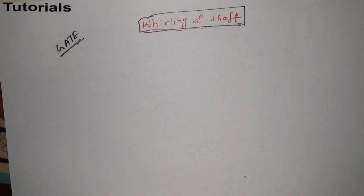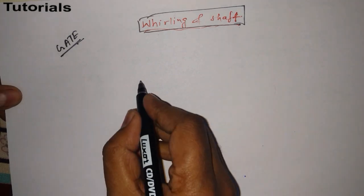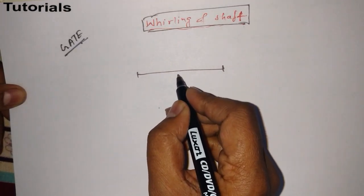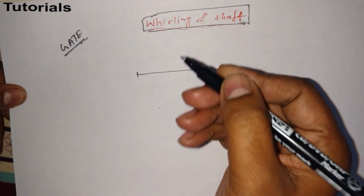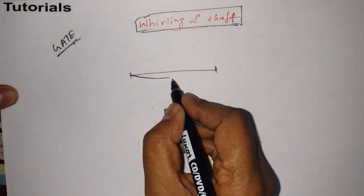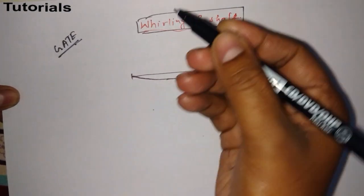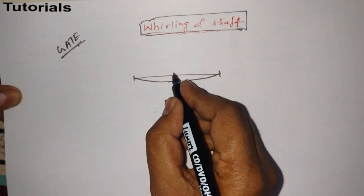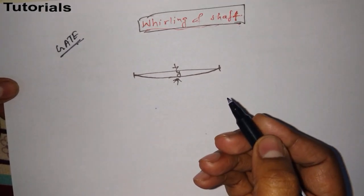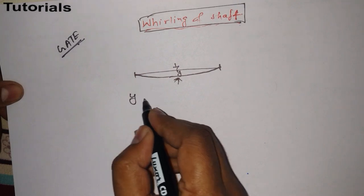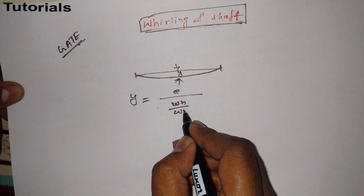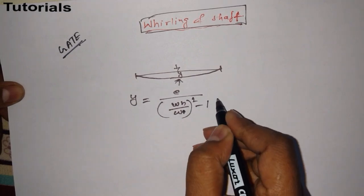If you know the basics of the concept — suppose we have a shaft here, and because of its movement and vibration there would be a little deflection from its axis — that deflection is y distance. We know that y is equal to e divided by [(ωn/ω)² minus 1].